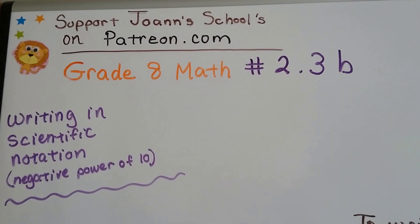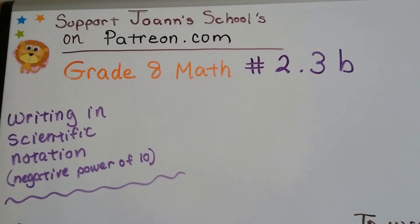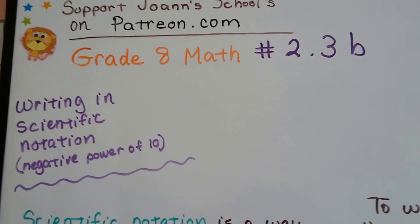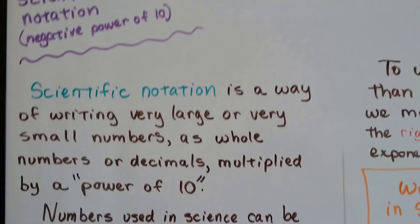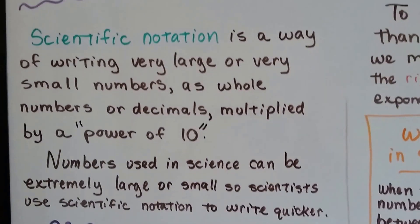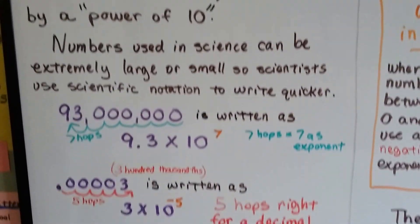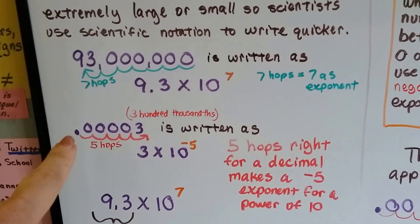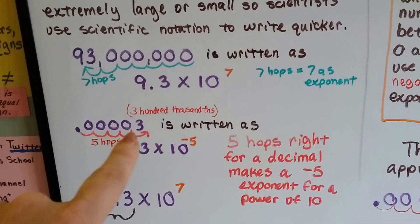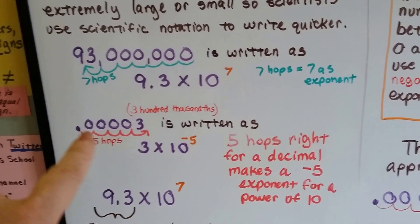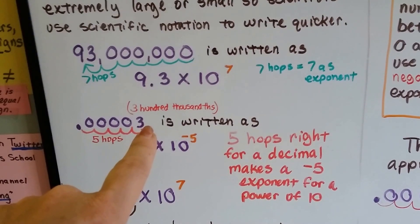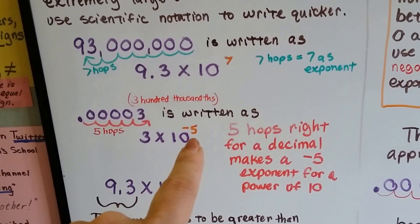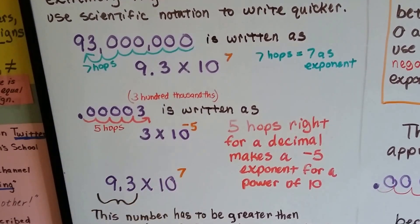Grade 8 math, number 2.3b: writing in scientific notation with negative powers of 10. As we said before in our previous video, all we have to do is move over to the right the number of hops we need to get behind the digit. If we move to the right, it's going to make negative exponents.